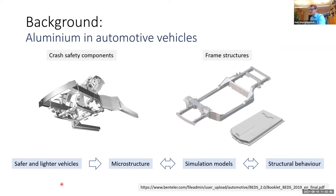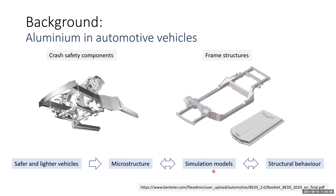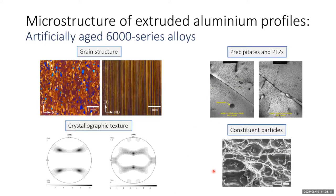The quest for safer and lighter vehicles leads to a need for simulation models that link the microstructure at various levels with the structural behavior, and thus enable simultaneous, continuous development of new alloys and new structures for better safety and lighter vehicles. The extrusion process leads to a rather complex microstructure of these extruded aluminium profiles, and we will be studying the artificially aged 6000 series alloys.